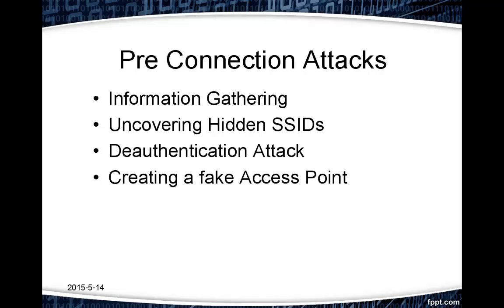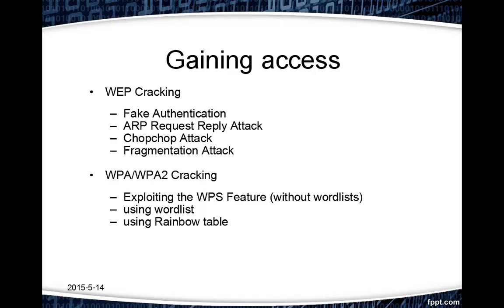In pre-connection attacks, we will gather information about access points around us, discover hidden SSIDs, and perform de-authentication attacks on clients and access points. Finally, we will create fake access points to get information about clients and to perform man-in-the-middle attacks. In this section we will also gain access to any particular access point.